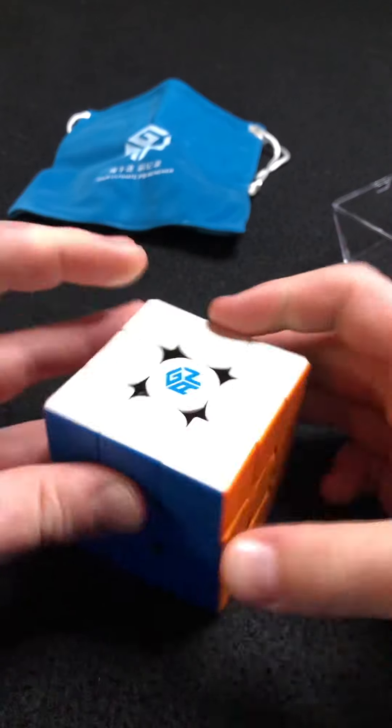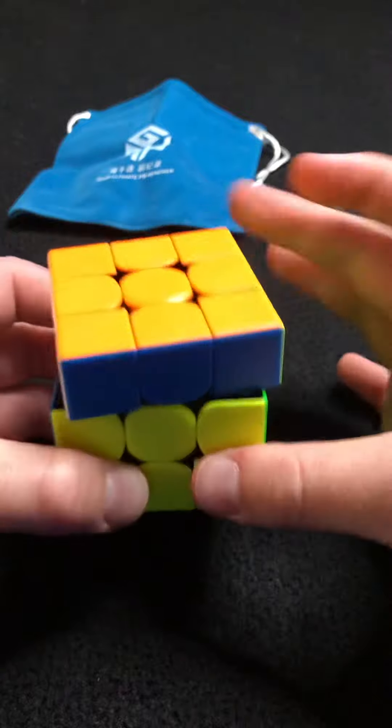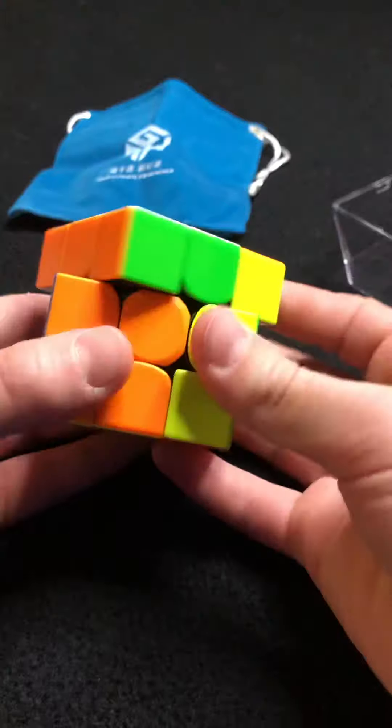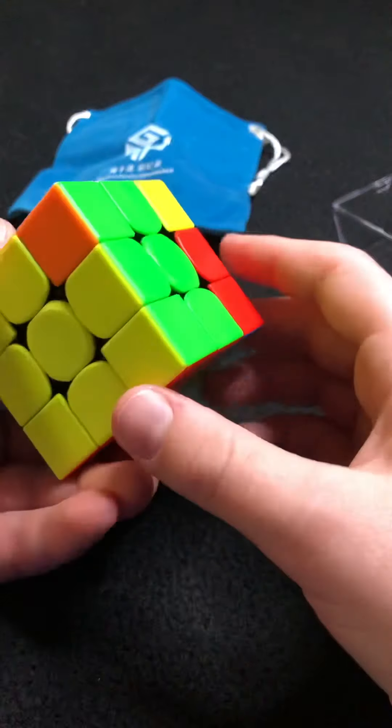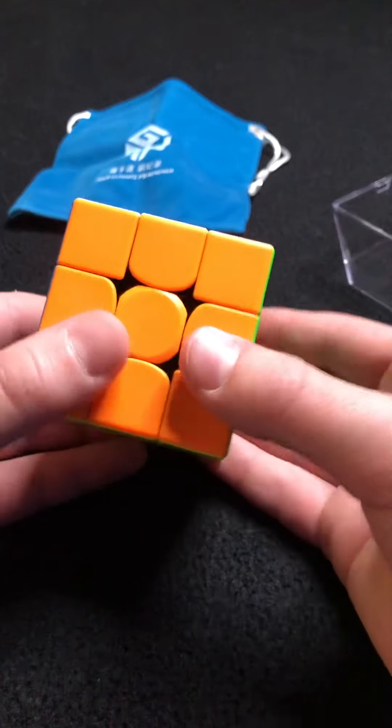Overall review, this is the Gan 356M. Turns really nice, has really good magnets. We're going to check the corner cutting here. Can do 45 degrees, that's good. About reverse...